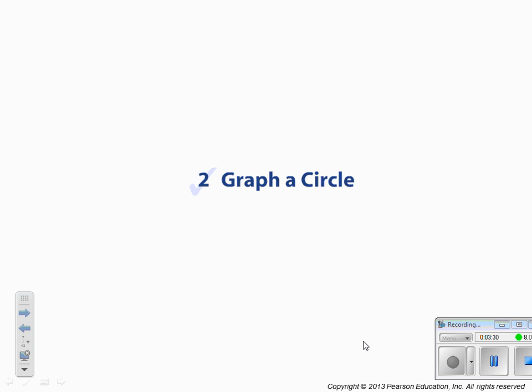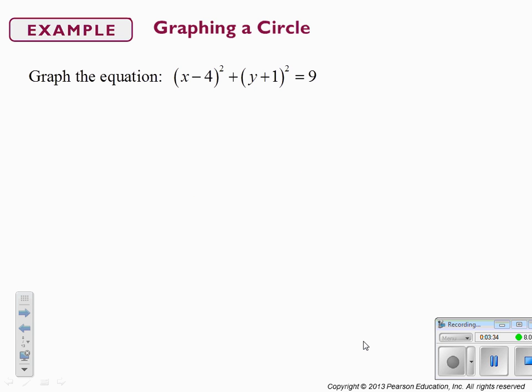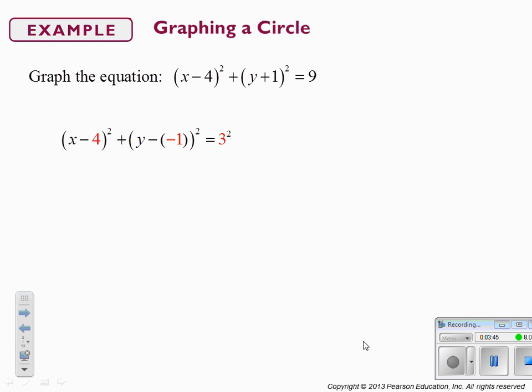Learning objective number two is graphing a circle. We're going to graph the equation (x minus 4) squared plus (y plus 1) squared equals 9. We find our center — it's the opposite of what's in the equation — so the center is positive 4 comma negative 1, and our radius is the square root of 9, which is 3.